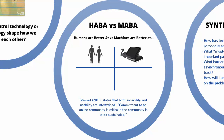Take a minute to brainstorm two lists: humans are better at versus machines are better at. Maybe the bigger question is this comment from Kakir: in some contrast to the classical notion about human-computer interaction, where a user interacts with an application, people may find themselves as parts of intractable systems, the function of which may be partly or fully unknown to them. So, how will you be successful in this online course? Stewart states that both sociability and usability are intertwined. Commitment to an online community is critical if the community is to be sustainable.